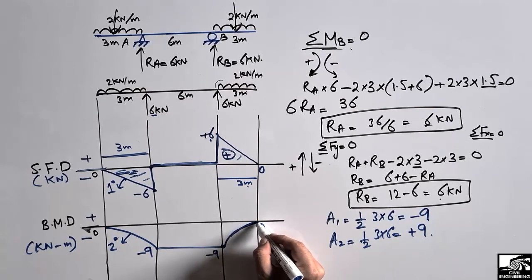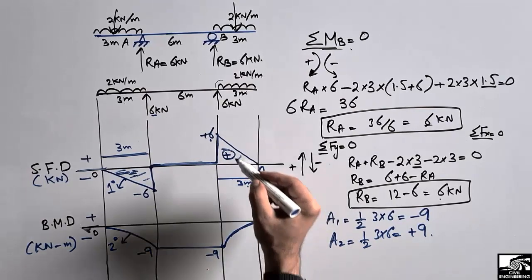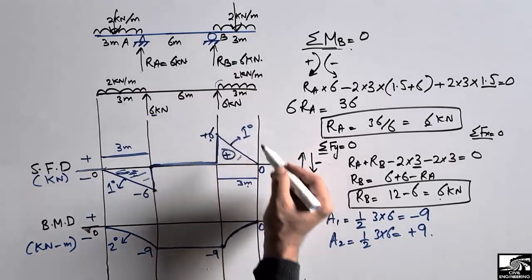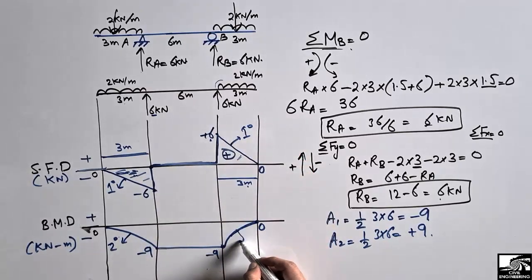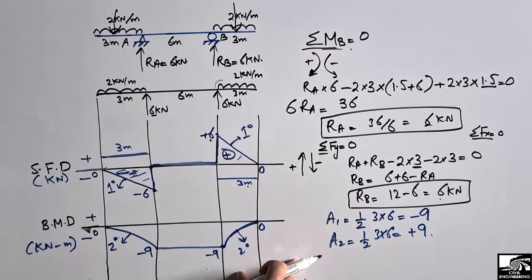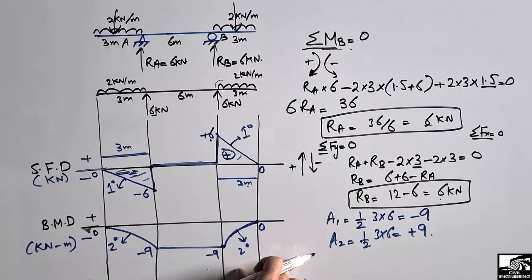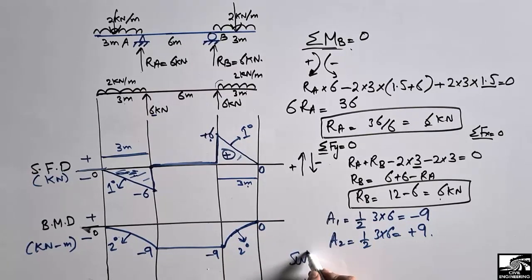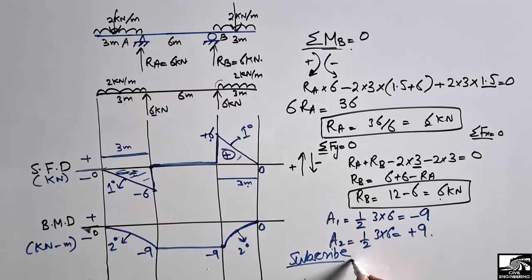We have zero bending moment at the free ends, and the bending moment diagram is a two-degree (parabolic) curve because the bending moment diagram is always one degree greater than the shear force diagram. I hope you guys understand how to draw the shear force and bending moment diagram. Don't forget to subscribe to our channel for E7 Engineering videos. Thank you for watching.